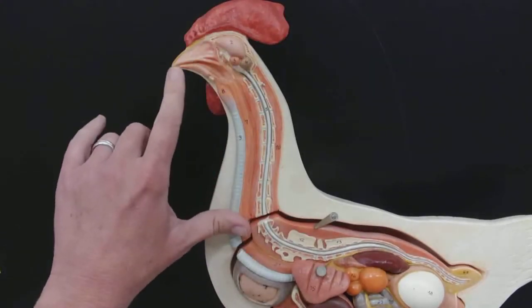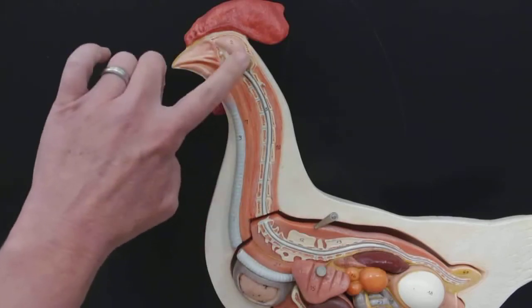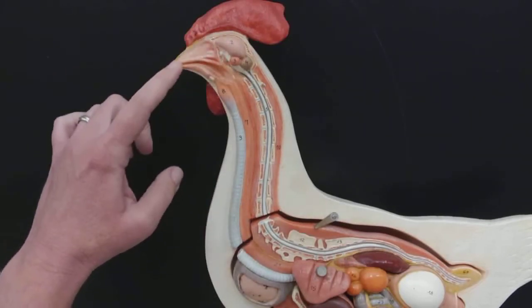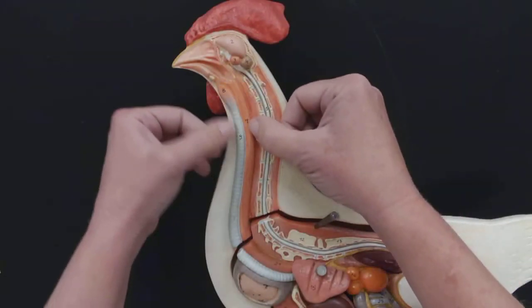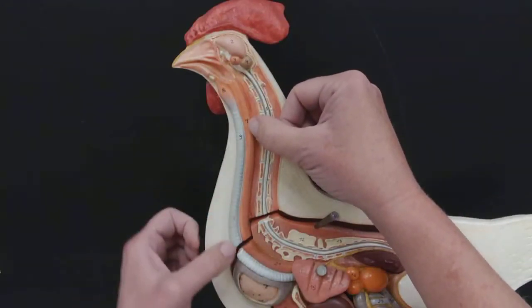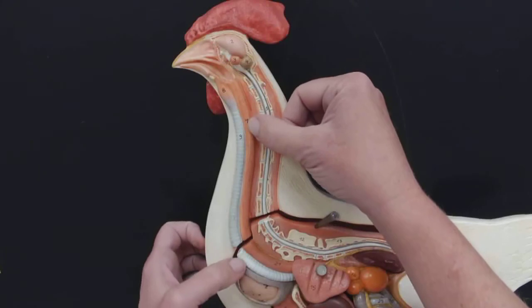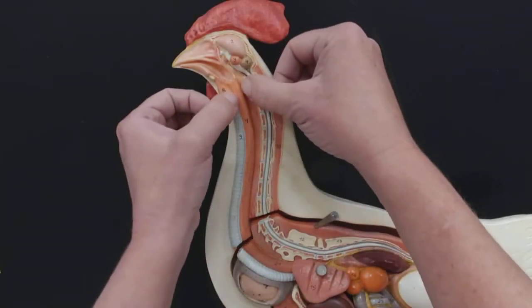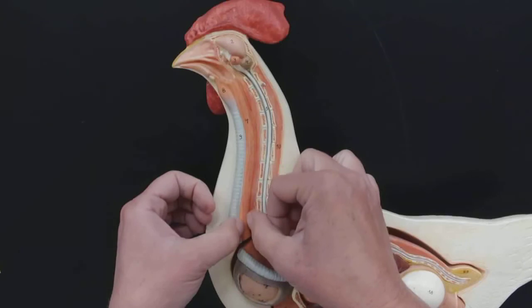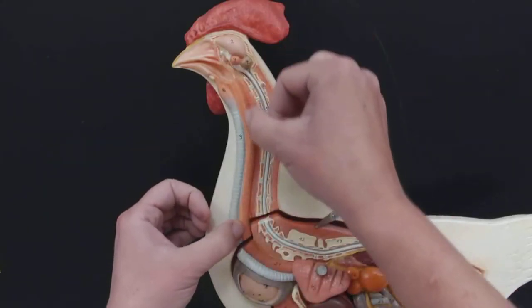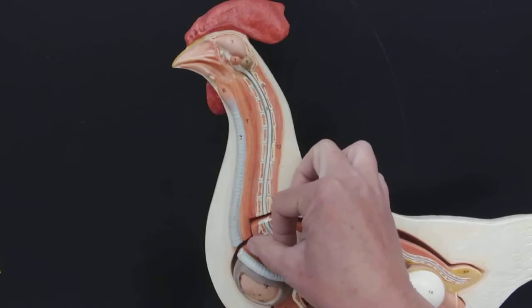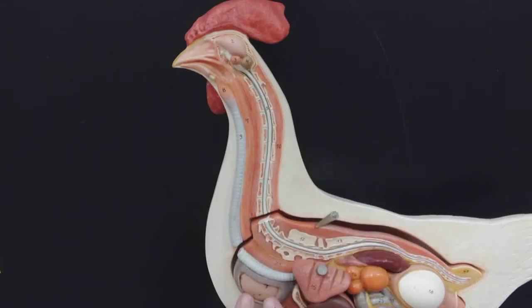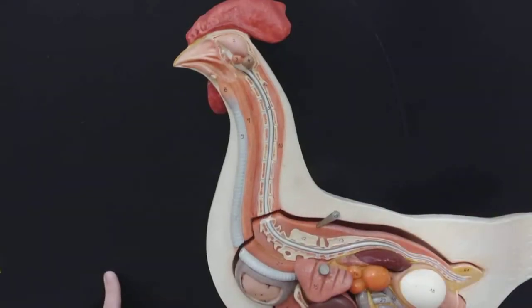If we go right up here towards the head, we can see where the mouth is. This obviously is the brain. Food's going to come in here and air. We see two separate tubes going down here. This is going to be the trachea going all the way down, the blue tube. Behind the trachea is the esophagus. The esophagus, that's where food's going to go down.